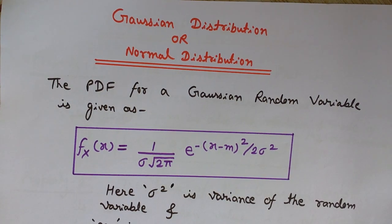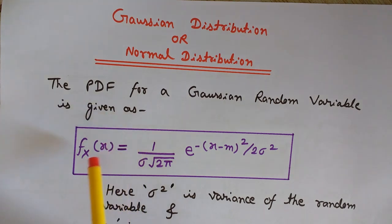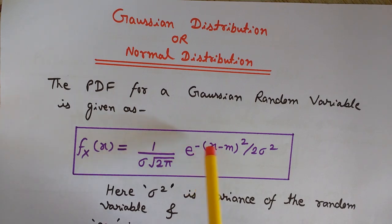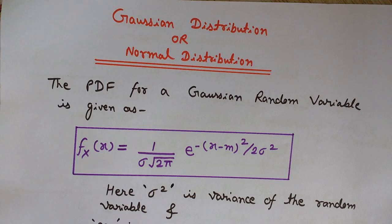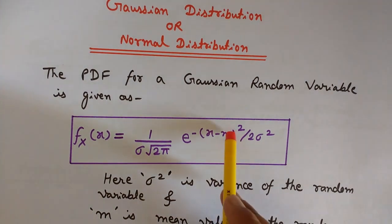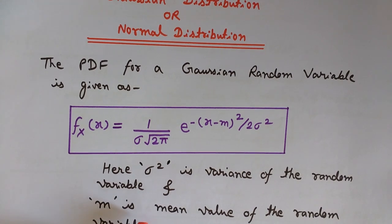Now let's see the probability density function for a Gaussian or normal distribution. The PDF for a Gaussian random variable is given as: f(x) = 1 / (σ √(2π)) × e raised to the power −(x − m)² / (2σ²). Here σ² is the variance of the random variable.